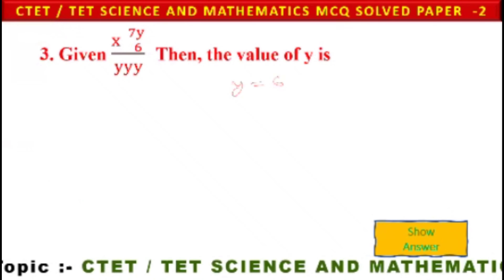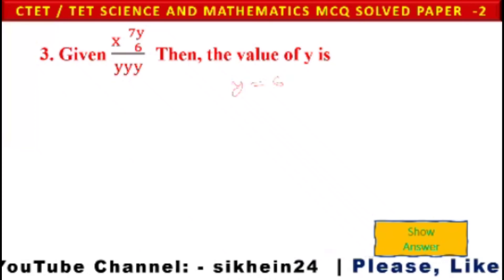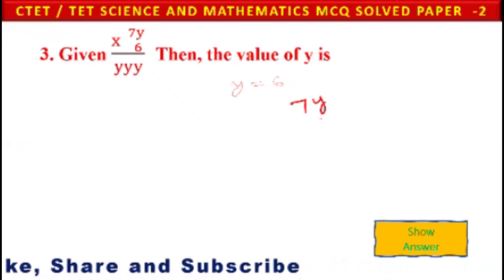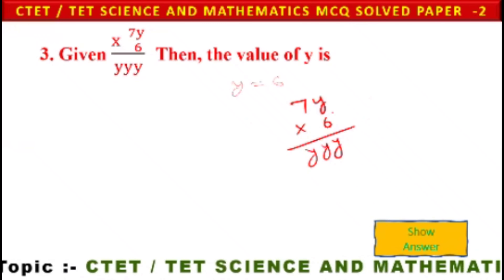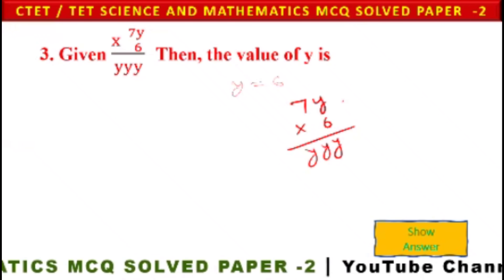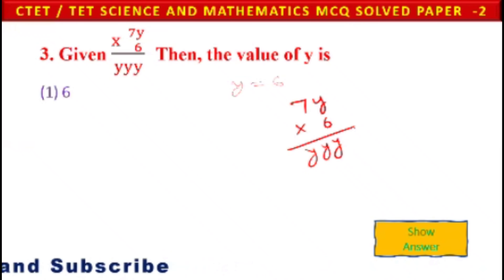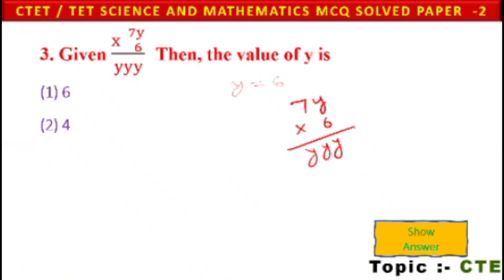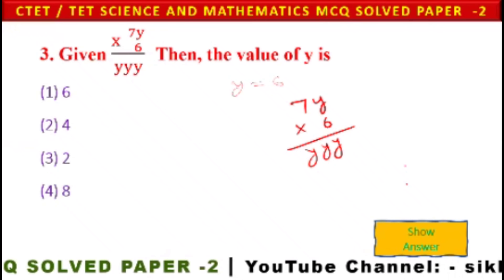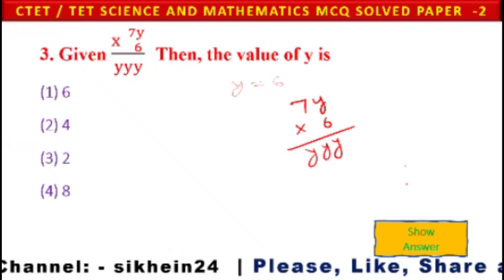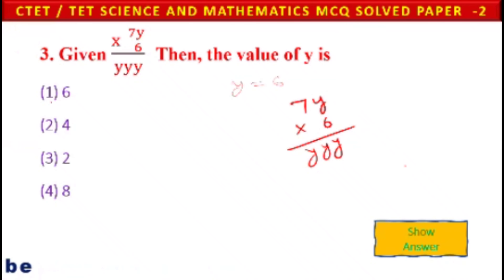Next question involves a number: x = 7y, where the expression 7y × 6 gives a product with the same digit y. We need to find the value of y. Options are: 1) 6, 2) 4, 3) 2, 4) 8. Testing values: initially 6 was considered but 6 is already given in the problem, so it cannot be taken. Testing y=4: 7×4=28, and 4×6=24, giving consistent results. The answer is 6 — wait, correction: 4 is the correct answer.